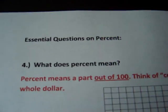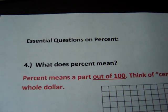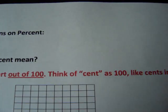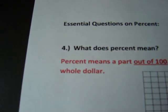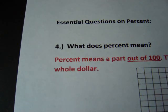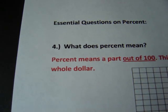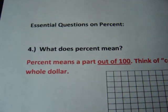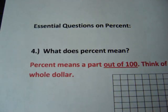Percent means a part out of 100. Per means out of, cent means 100. Think of cent as 100, like cents in a whole dollar. There are 100 cents in a dollar, or there are 100 years in a century. The cent prefix means 100, so percent means some part out of 100.